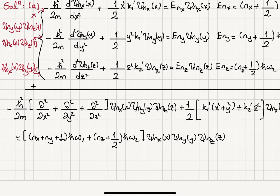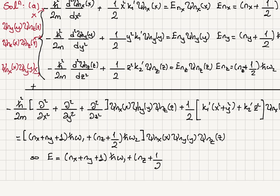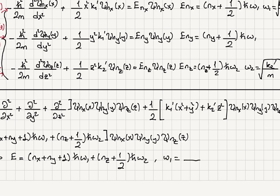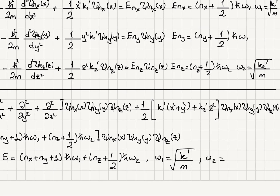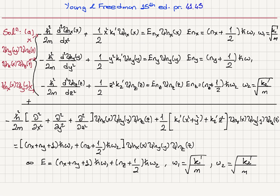We can read off the energy levels directly: E = (nₓ + n_y + 1)ℏω₁ + (n_z + 1/2)ℏω₂, where ω₁ = √(k₁'/m). These are the energy levels we were after.